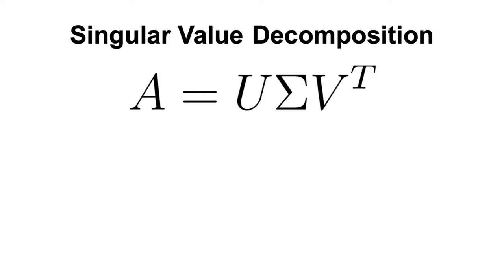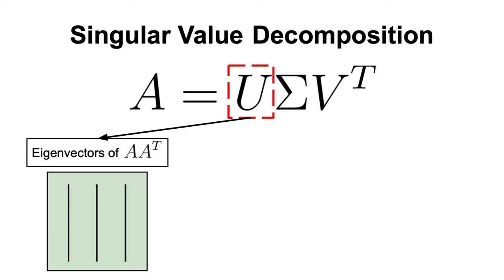In short, the singular value decomposition of any rectangular matrix A is given by the product of three matrices: U, Sigma, and V transpose. U is an orthogonal matrix and contains the eigenvectors of AA transpose, also known as the left singular vectors of A.